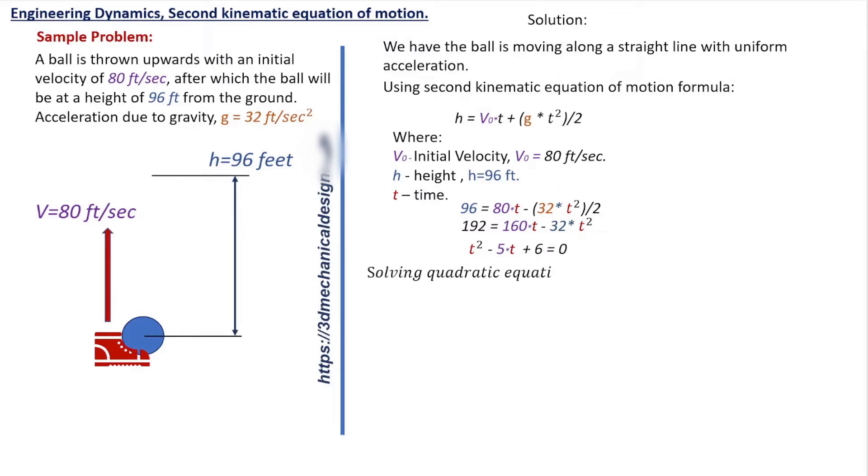Solving quadratic equation: T equals 5 plus minus square root of 5 squared minus 4 times 1 times 6, divided by 2 times 1.